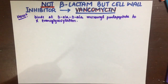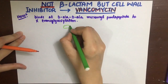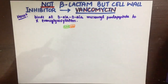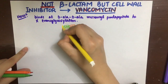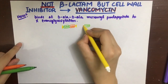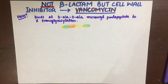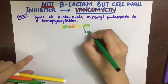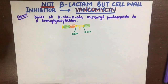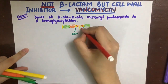In the bacterial cell wall, normally what happens is that the N-acetylglucosamine and N-acetylmuramic acid residues have terminal D-alanine residues. These D-alanine residues need to bind together to form the bacterial cell wall. This reaction is known as transglycosylation and it is carried out by an enzyme known as transglycosylase.